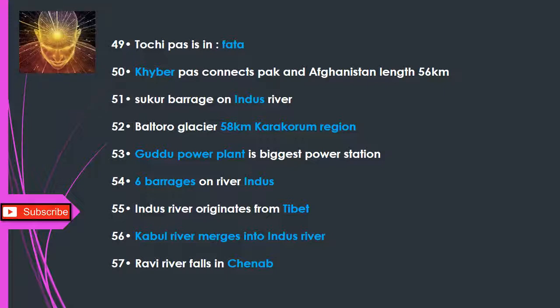Q51: Sukkur Barrage is on the Indus River. Q52: Baltoro Glacier is 58 km long, in the Karakoram region. Q53: Tarbela Power Plant is the biggest power station. Q54: Guddu Barrage is on the River Indus. Q55: Indus River originates from Tibet. Q56: Kabul River merges into the Indus River. Q57: Ravi River falls into the Chenab.